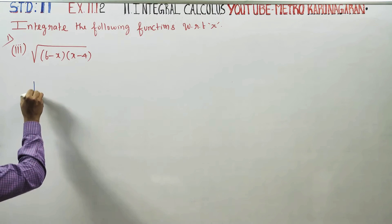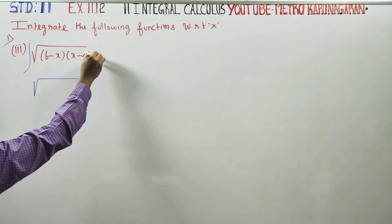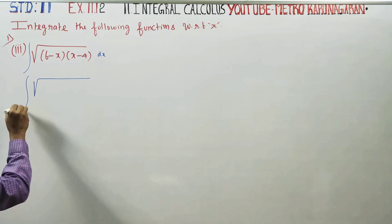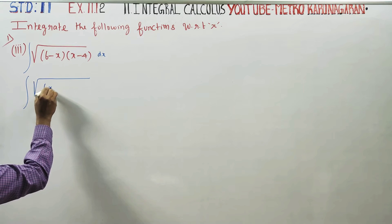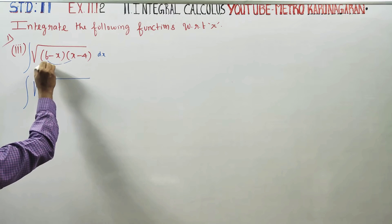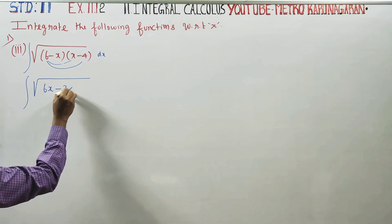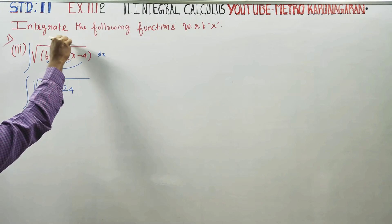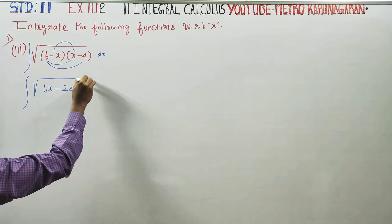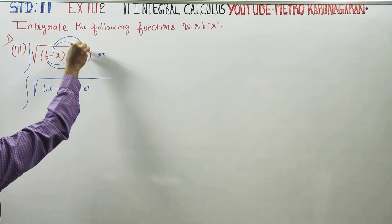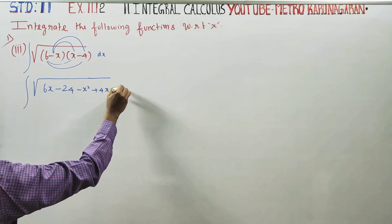Stage 1: if the integration is going to be with respect to x, first multiply: 6 into x is 6x, 6 into minus 4 is minus 24. Then minus x into x is minus x squared, minus x into minus 4 gives plus 4x, dx.